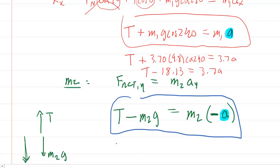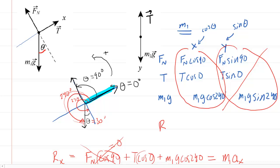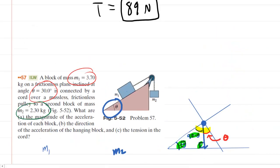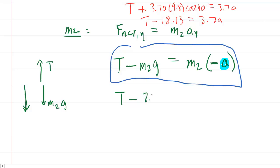Moving over to block 2, we'll plug in known values. T minus the mass of block 2, which I believe was 2.3 kilograms, times 9.8 equals the mass, which again is 2.3, times negative A. Don't forget that negative. And it's probably more convenient to stick that negative in front here. So you'll have negative 2.3A. Let's multiply 2.3 by 9.8 so we can simplify this equation. Tension minus 22.54 equals negative 2.3A.